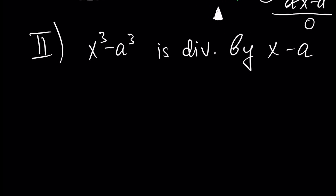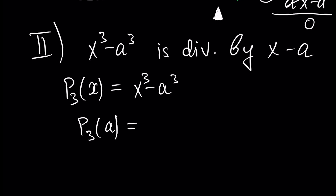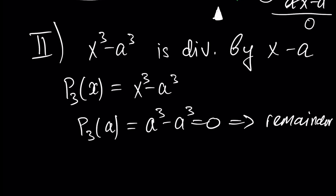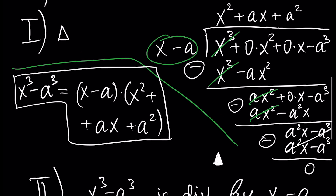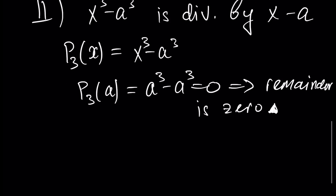How is Bezout's theorem used? We take our polynomial p3(x) and insert a in place of x. Since p3(a) equals a cubed minus a cubed, which equals zero, the remainder is zero. Therefore our polynomial is divisible by x minus a, and the quotient is the polynomial x squared plus ax plus a squared, as we already showed.